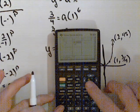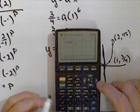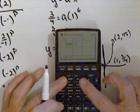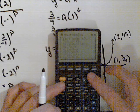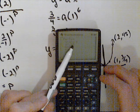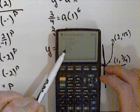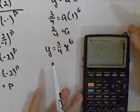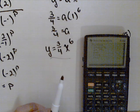So I can go back to my list, change that to a positive 1, and now if I go stat calc to my power reg, I get y equals a times x to the b where a is 0.75 and b is 6. The same one we found algebraically.